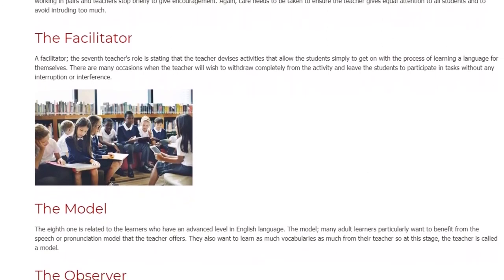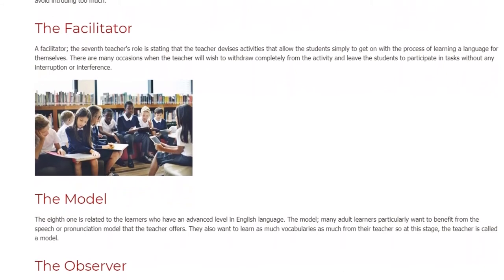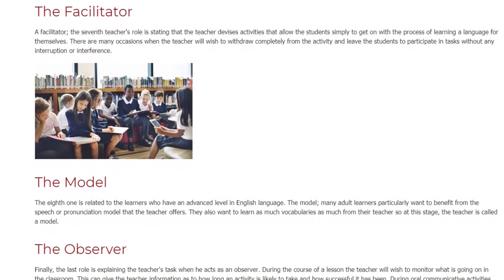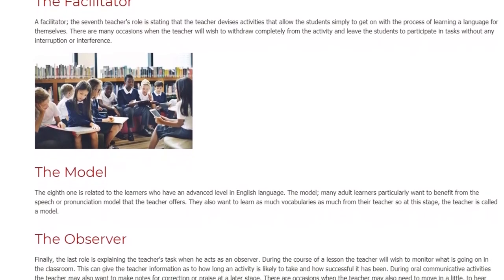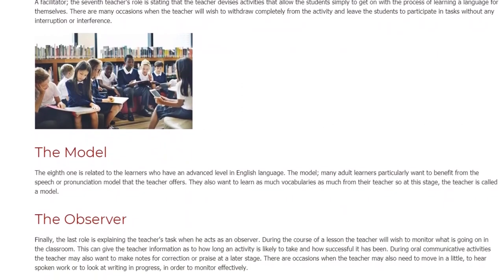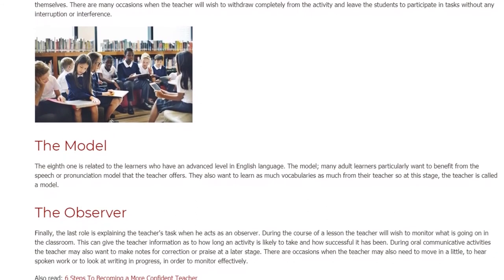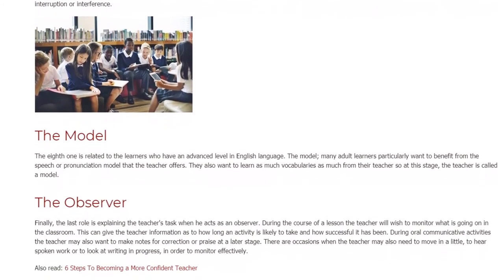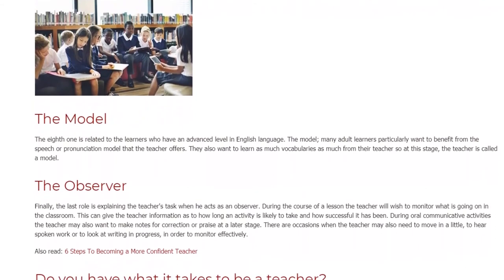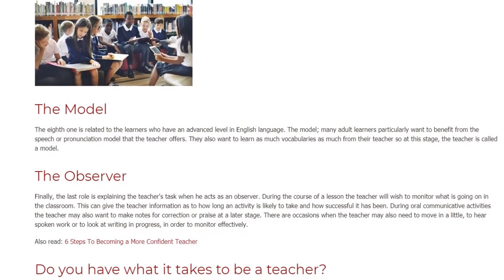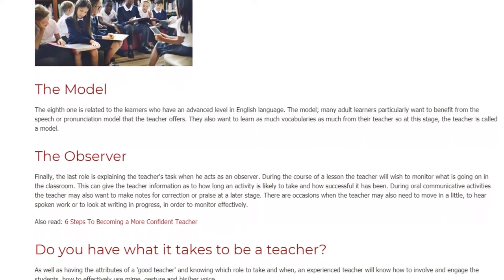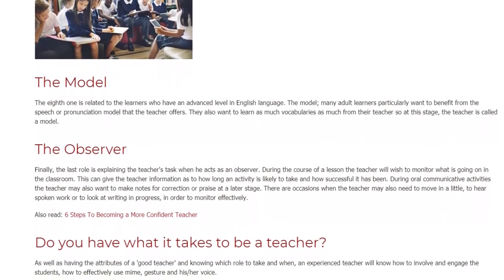The Observer. Finally, the last role explains the teacher's task when acting as an Observer. During the course of a lesson the teacher will wish to monitor what is going on in the classroom. This can give the teacher information as to how long an activity is likely to take and how successful it has been. During oral communicative activities the teacher may also want to make notes for correction or praise at a later stage, and may need to move in a little to hear spoken work or look at writing in progress.